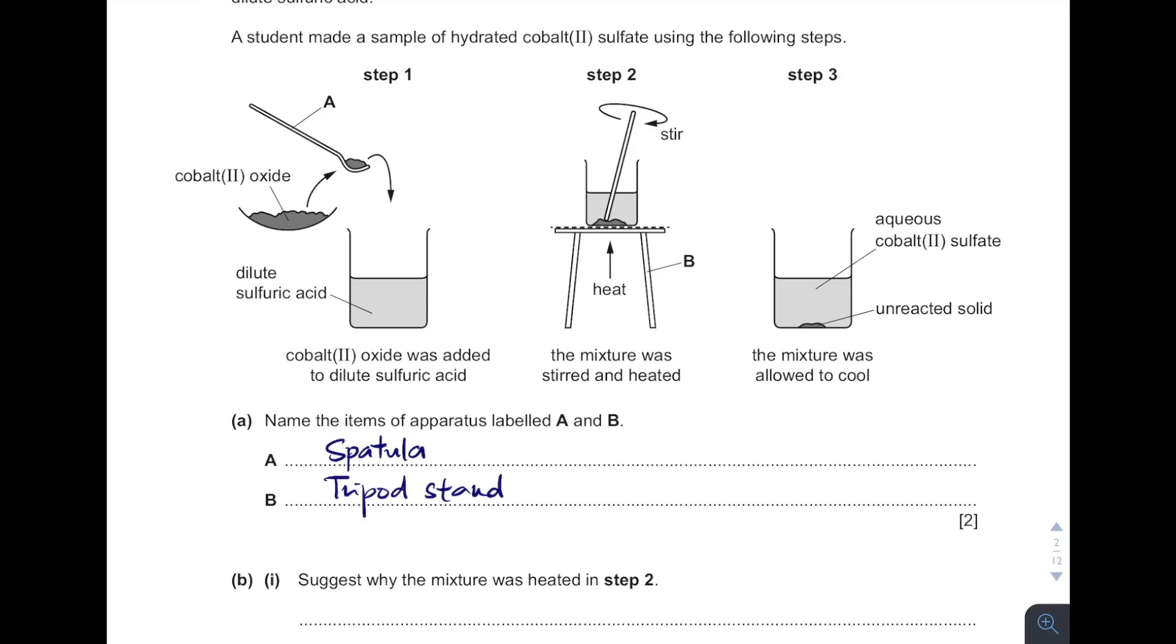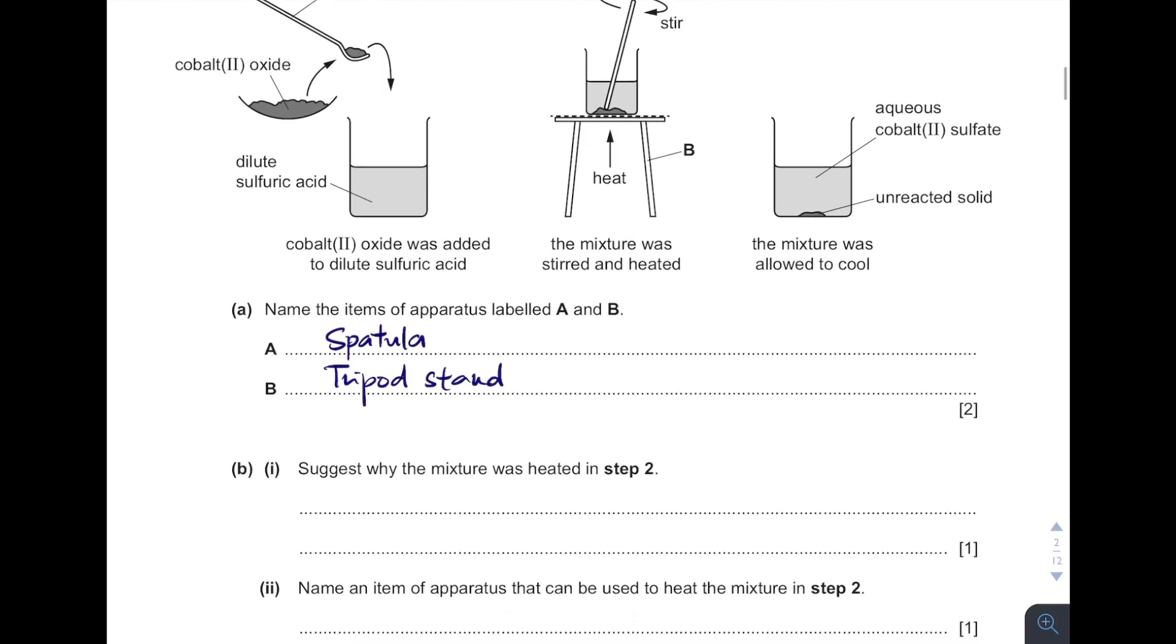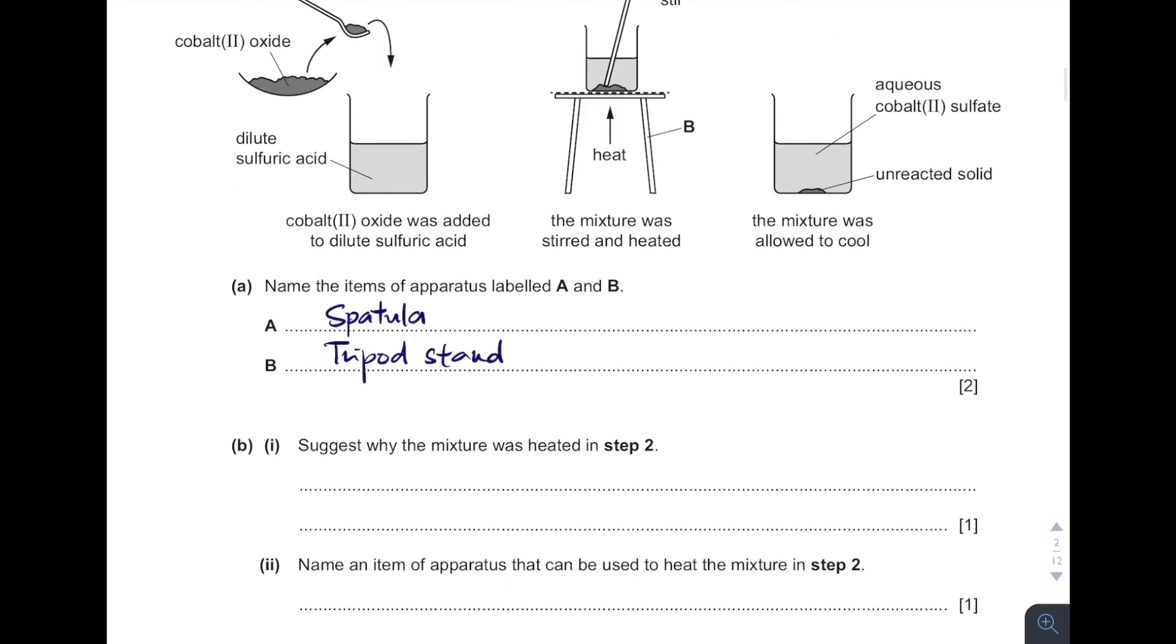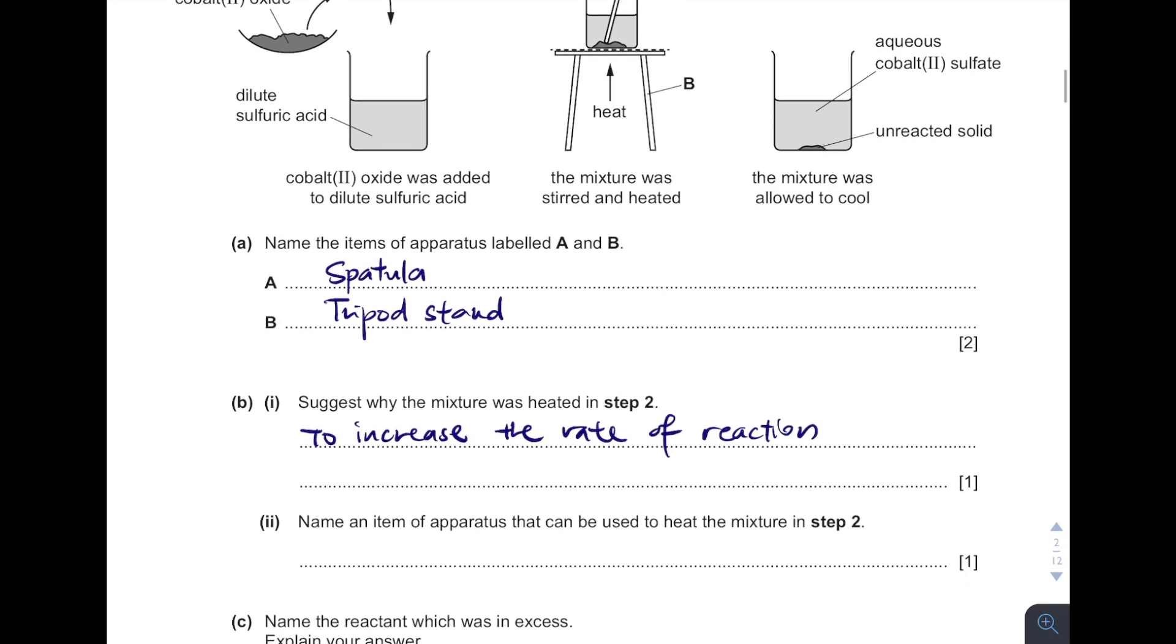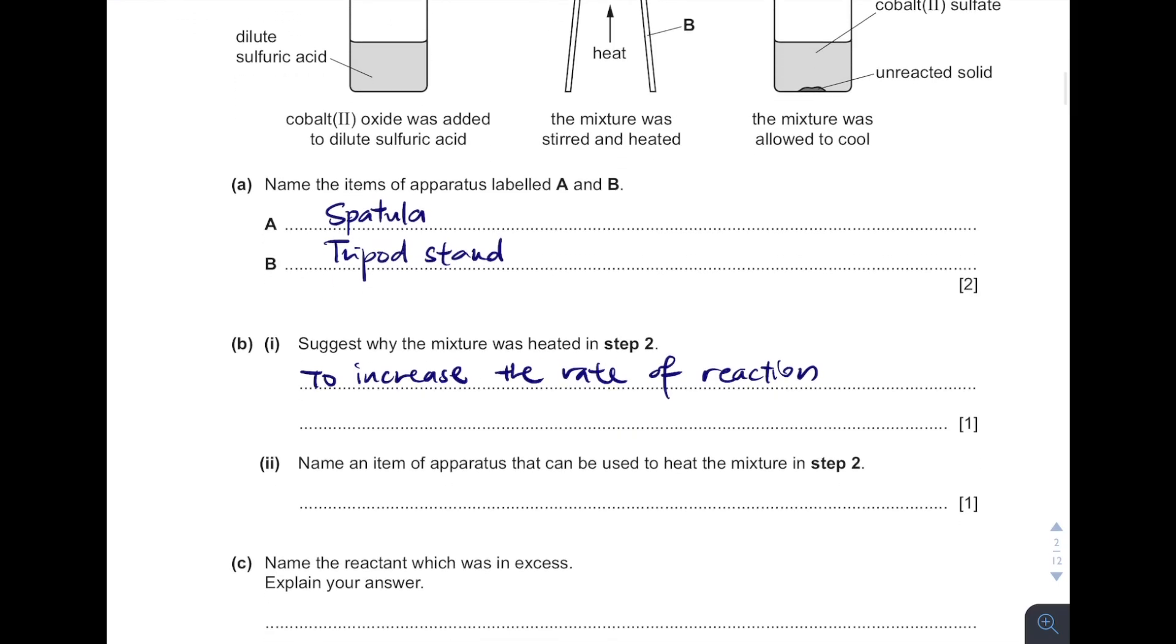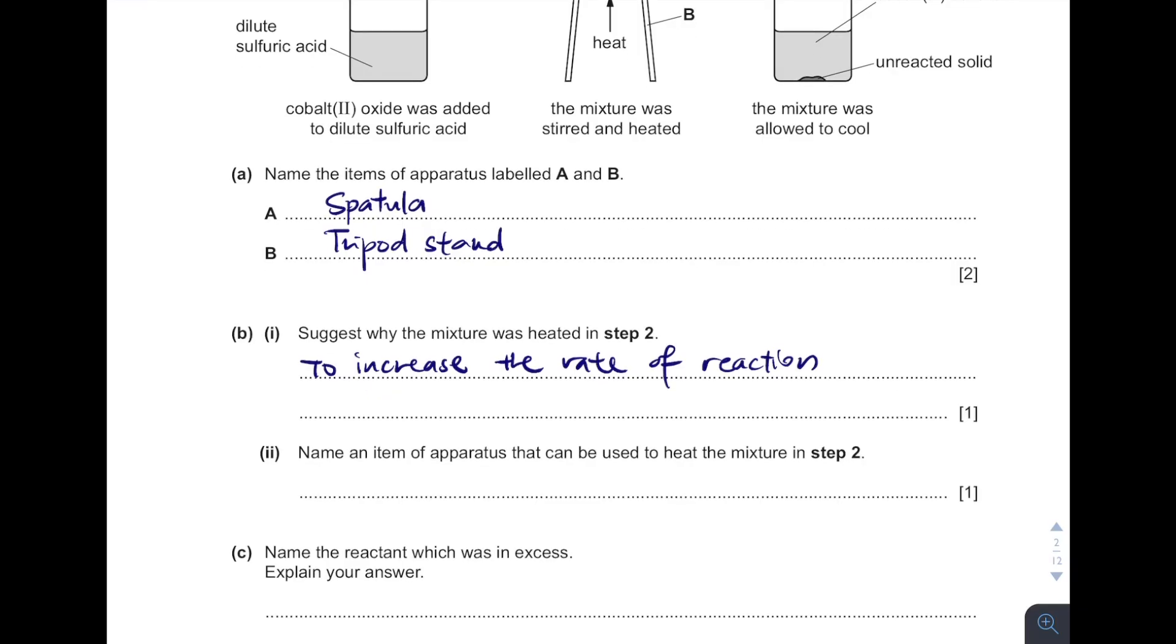Suggest why the mixture was heated in step 2. Why? Because as the temperature increases, it will eventually increase the rate of reaction, so that the solid will get dissolved faster. And then name the apparatus that can be used to heat. Make sure it is lighter. Lighter is the incorrect answer. It has to be Bunsen burner.